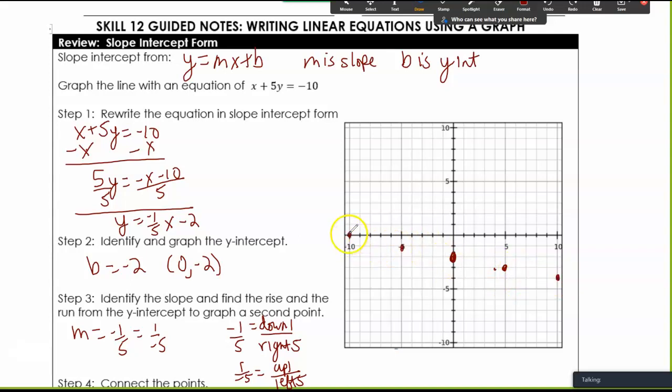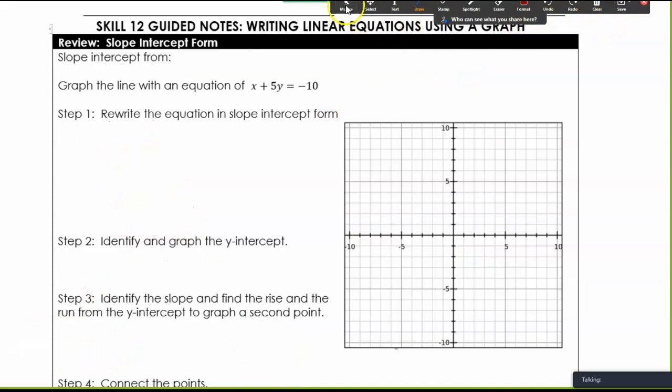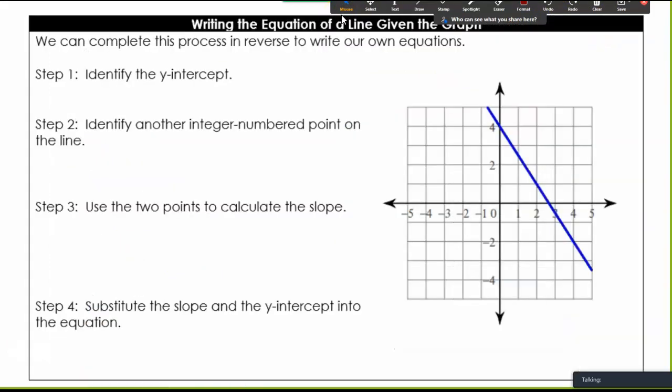It doesn't matter which one we do, and then we want to connect the dots. So this is a review of slope intercept form. Given slope intercept form, that is how we graph. Now we're doing the opposite. Given a graph, we're going to write the slope intercept form.